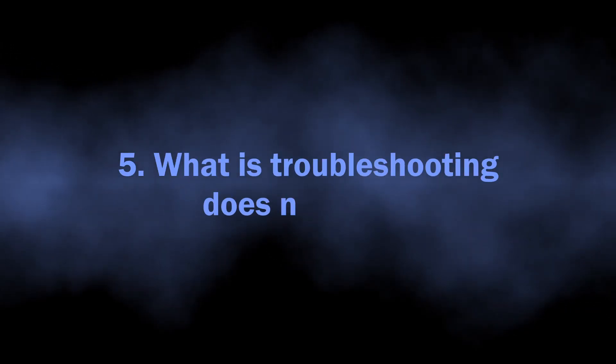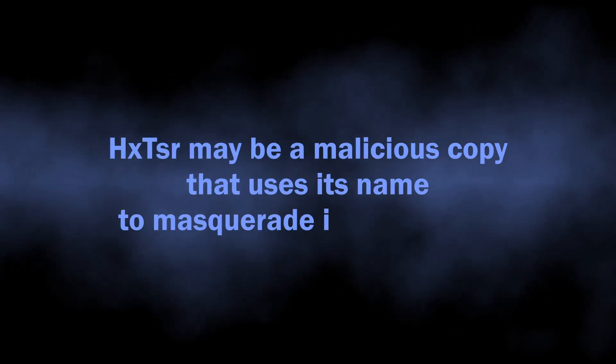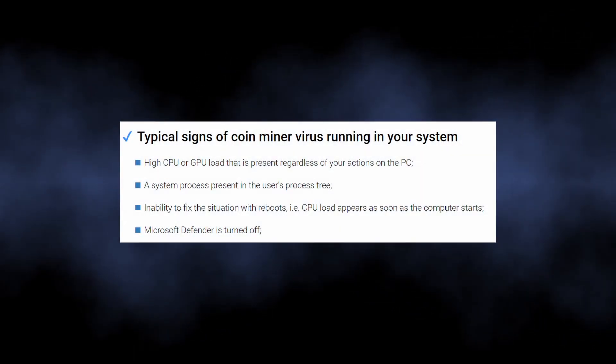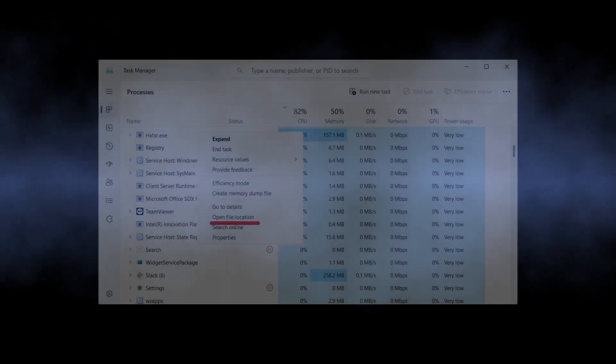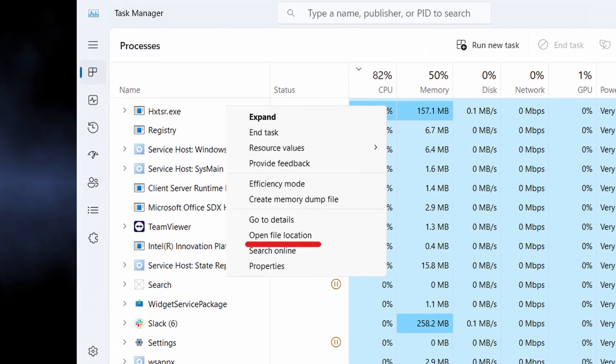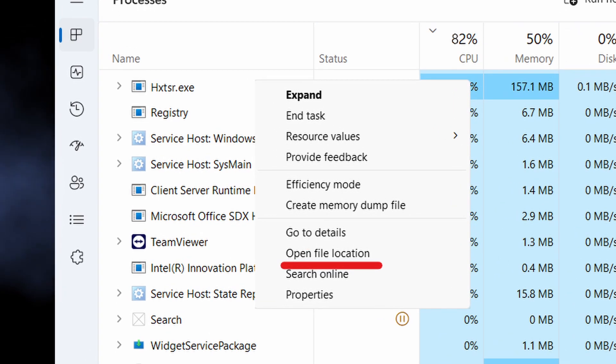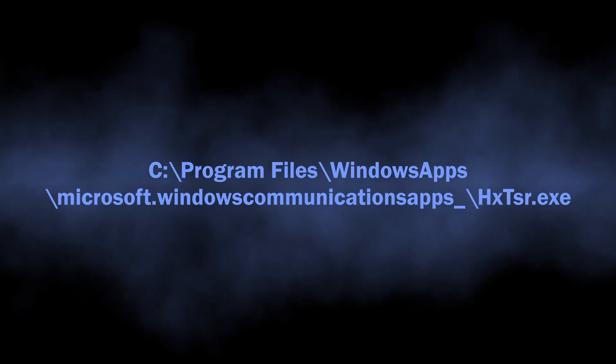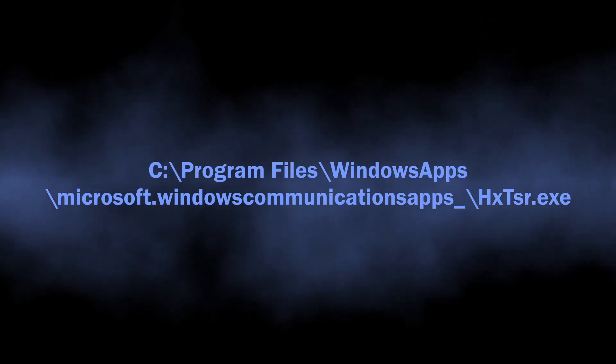But what if this does not help and HXTSR keeps taking a lot of system resources? There is a chance that a malicious program is using the name of this benign process as a disguise — this is often done by malicious coin miners. You can verify whether it is a malicious process by opening the file location. In Task Manager, find the HXTSR process, right-click it, and choose Open File Location. The normal location for this file is the Windows Apps folder in the Program Files directory, as shown on the screen. Any other location unfortunately means malware activity.